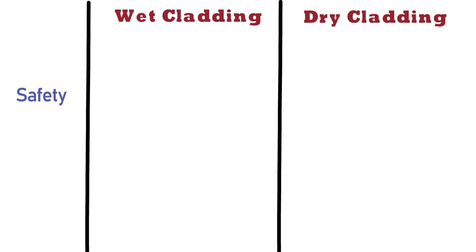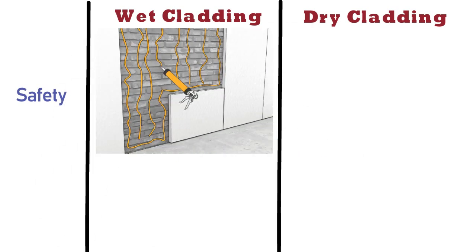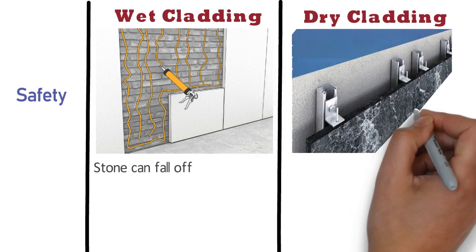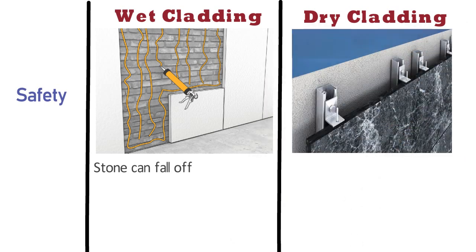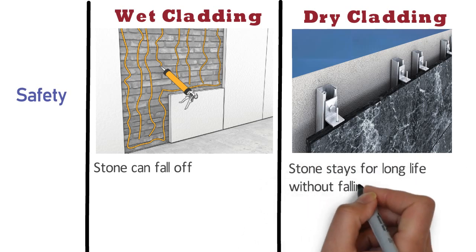Safety: In case of wet cladding, if a good recommended adhesive is not used, then the bond between the wall and adhesive or mortar can become weak, and there are chances that the stone can fall off. On the other hand, the dry cladding method is safe, and chances of stone falling down at a later date are removed. The stone stays for a long life without falling off.